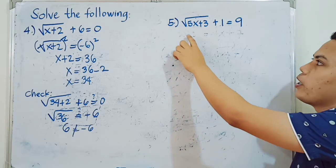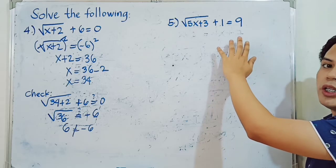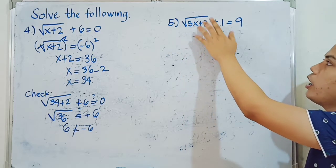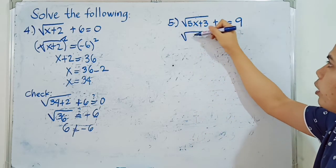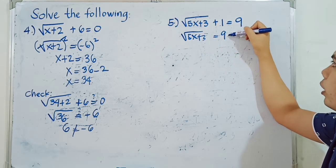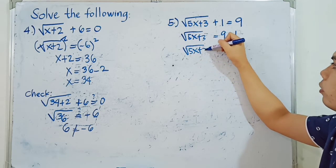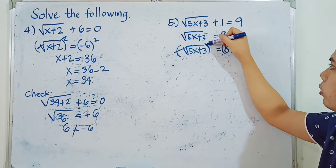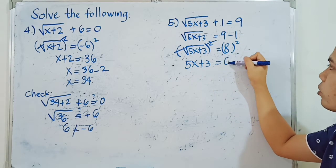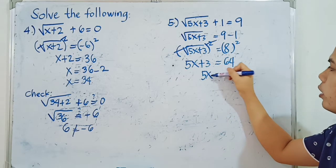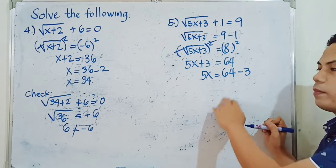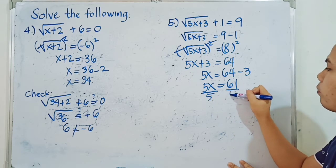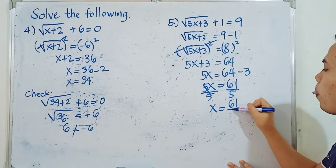For example number 5, we have the square root of 5X plus 3 plus 1 is equal to 9. We isolate the radical by transposing positive 1 to the right side, giving us the square root of 5X plus 3 is equal to 8. We then square both sides, giving 5X plus 3 is equal to 64. Transposing 3 to the right side gives 5X is equal to 61. Dividing both sides by 5, we get X is equal to 61 over 5.